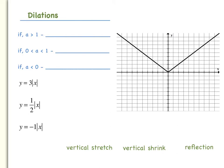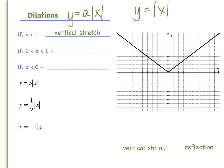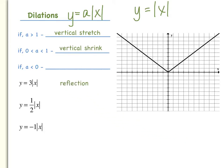First we will talk about dilations. The formula for this equation would be y equals a times the absolute value of x. Now remember, the parent absolute value function is y equals the absolute value of x. When you have this number before the absolute value of x, it means one of three things: there could be a vertical stretch, a vertical shrink, or a reflection. If the a value is greater than one, that's when we have a vertical stretch.